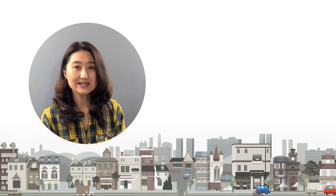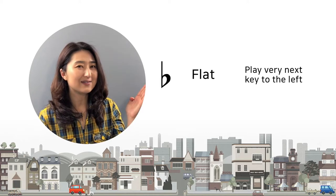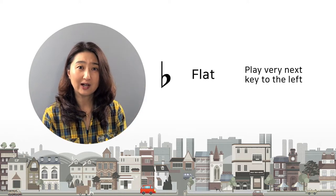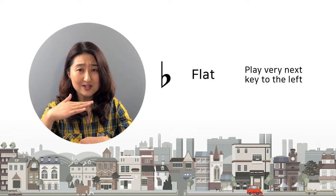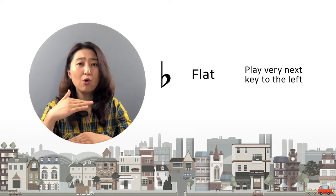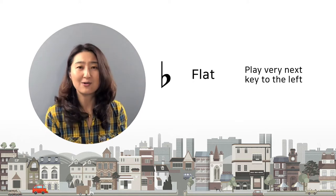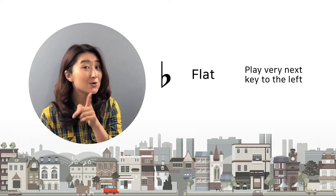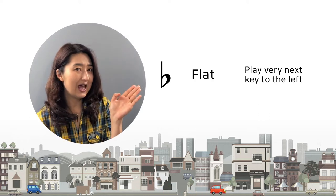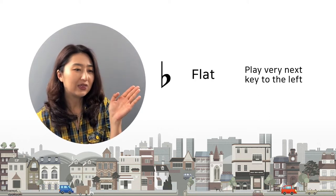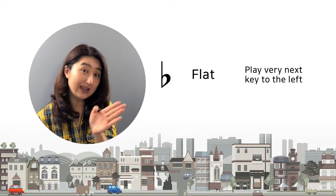The next sign is flat. Think about a flat tire — what happens if you have a flat tire? You lose air, it gets lower. So flat means going down. Whenever you see the flat sign, you have to play the next key to the left, because left is going down.